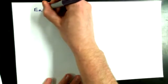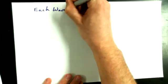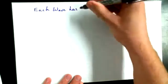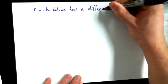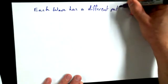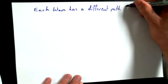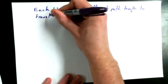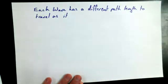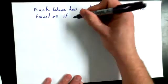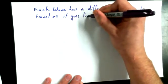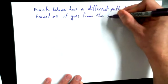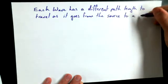Alright, so if we're talking about two point sources producing waves that are going to interfere at a given point, we could say that each wave has a different path length to travel.